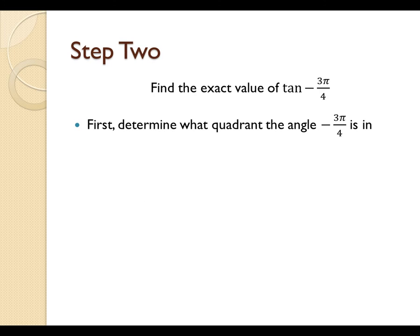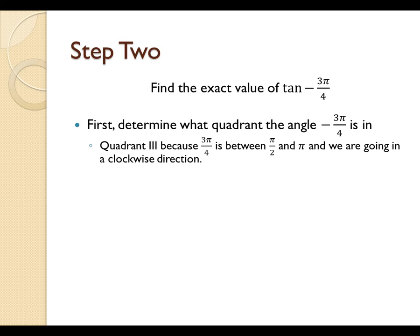For part B, we need to find the exact value of negative 3π over 4. So, the first thing we are going to do again is determine what quadrant this angle is in. It's in quadrant 3 because 3π over 4 is between π over 2 and π, and we are going in a clockwise direction, not a counterclockwise direction. Another way that you might want to think of this is that it's basically the angle 3π over 4 that's been flipped over the x-axis.